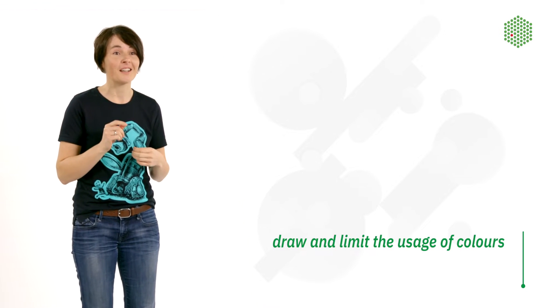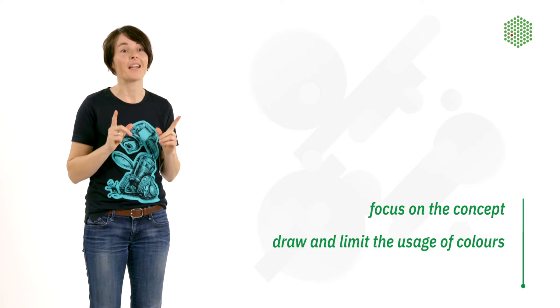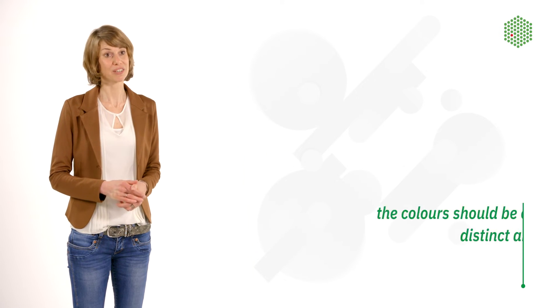I would draw first and limit myself to a maximum of three colors, just to focus on the concept rather than making it pretty first. Once your drawing has answered all the questions you had, then move on to a digital program like Illustrator. The colors in a graphical abstract should be applied coherently, distinctly, and subtly — ideally matching the colors in the scientific paper. Limiting your colors from the beginning means you're more likely to succeed in the final illustration.